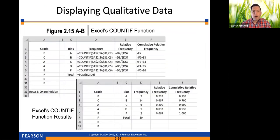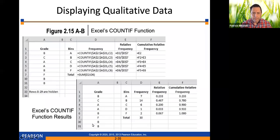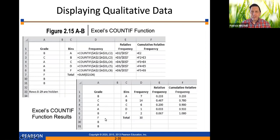What I really want to focus on here is this. Let's say I had a list of grades. The list starts in row two, goes down to row seven, and then rows eight through 29 are hidden. There's a list of grades, and the frequency distribution for qualitative data just looks like what you see here. You go through and count how many occurrences of each grade there are. In this data set there are seven A's, 14 B's, six C's, one D, and two F's.